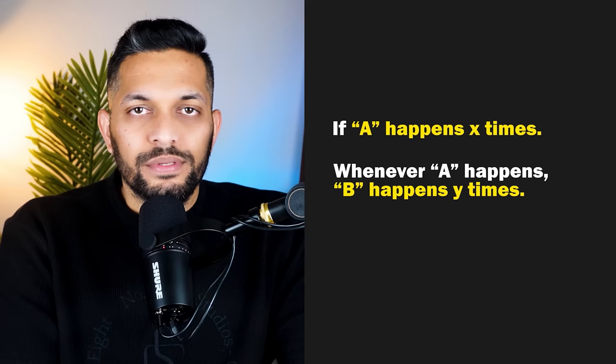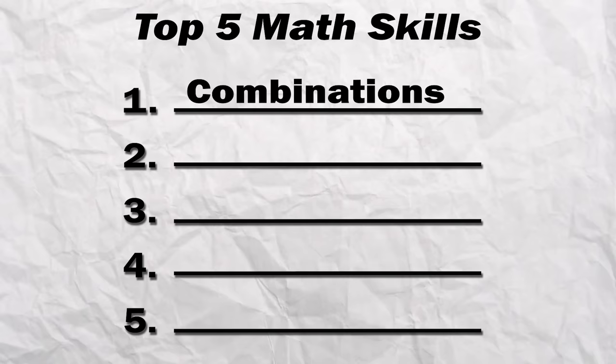What I want you to take away from this is that whenever you have A that happens x times, and every time A happens, B happens y times, B will happen a total of x into y times. Now to know the value of k in the last exercise, we need to know this second concept.